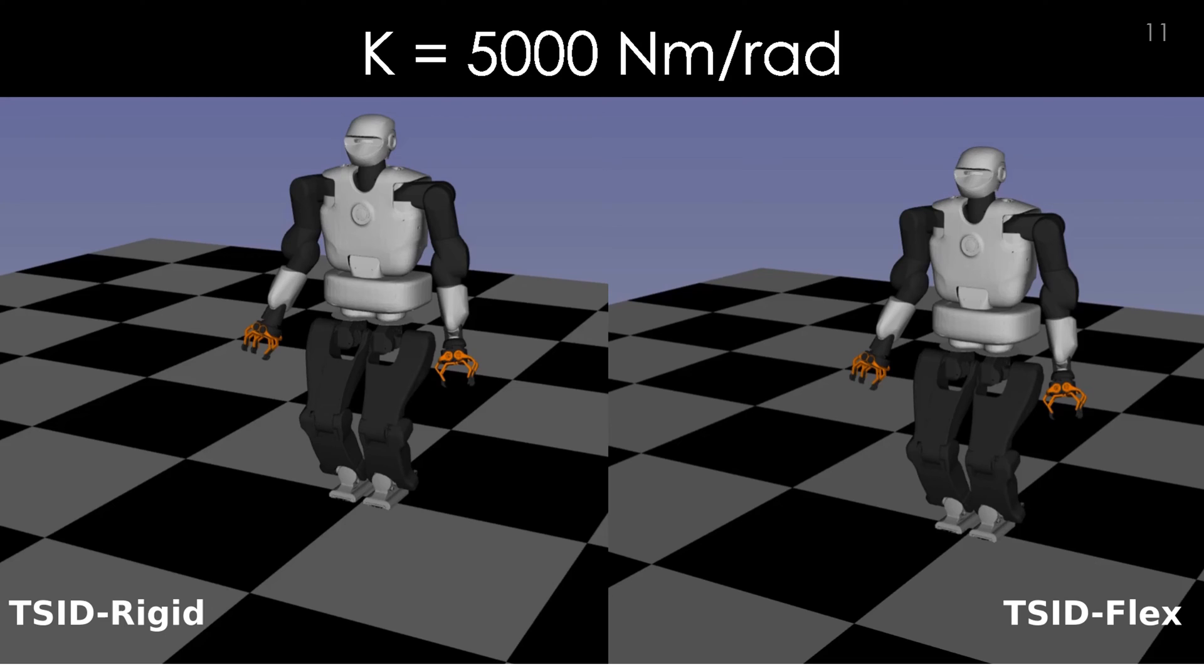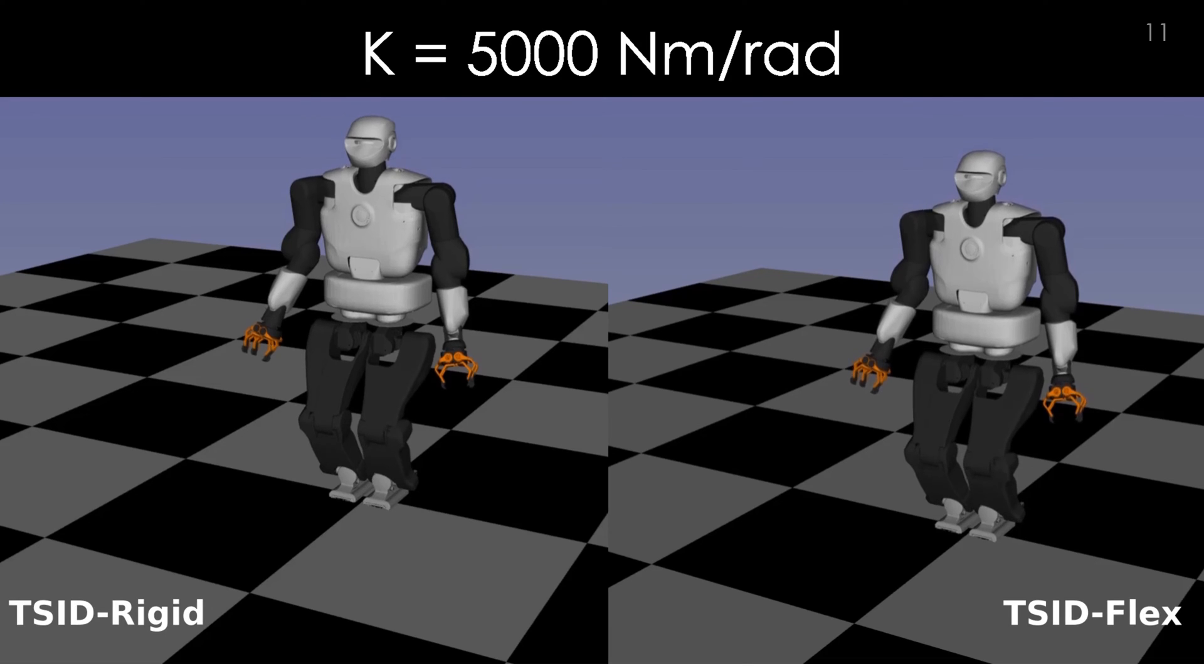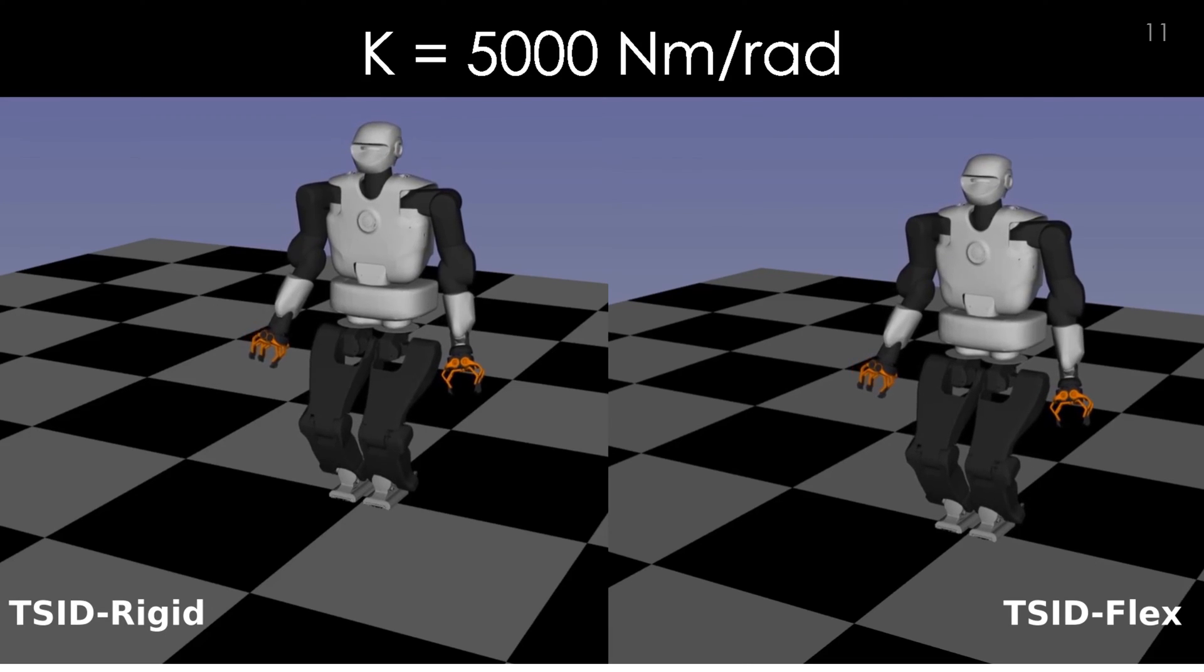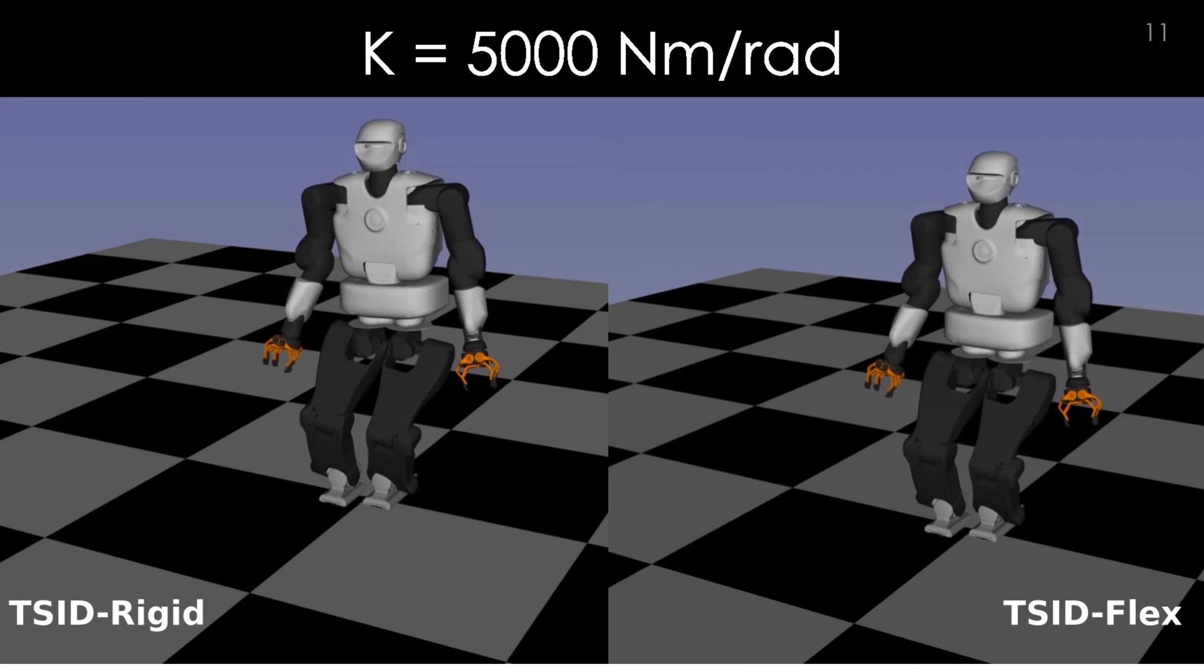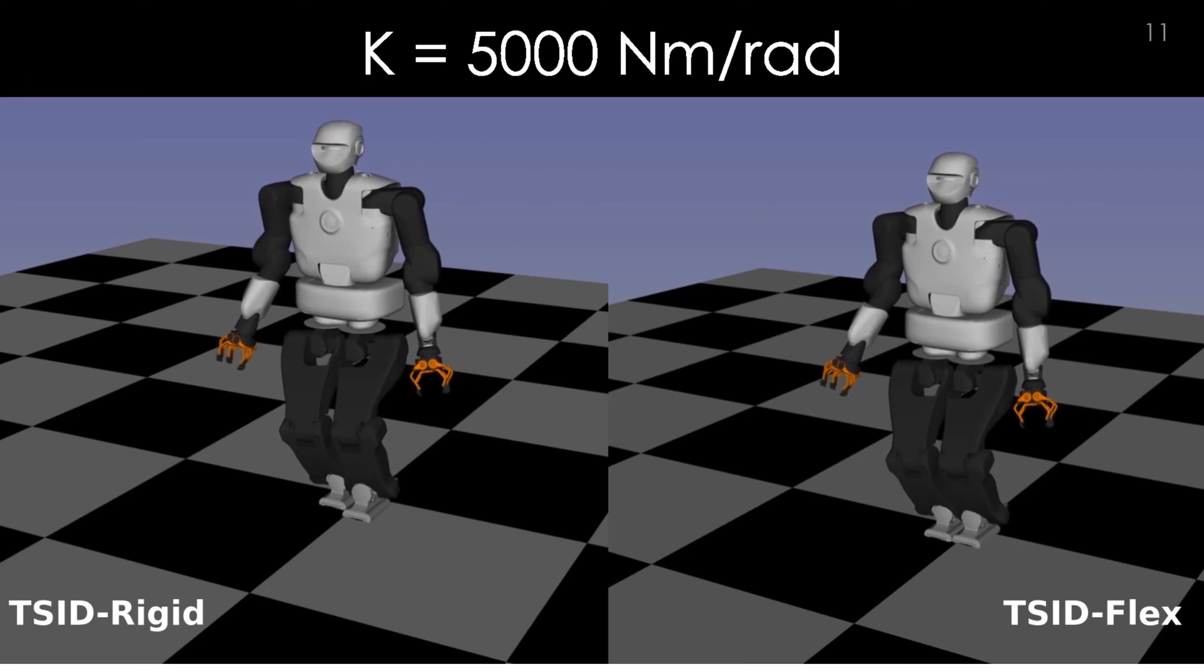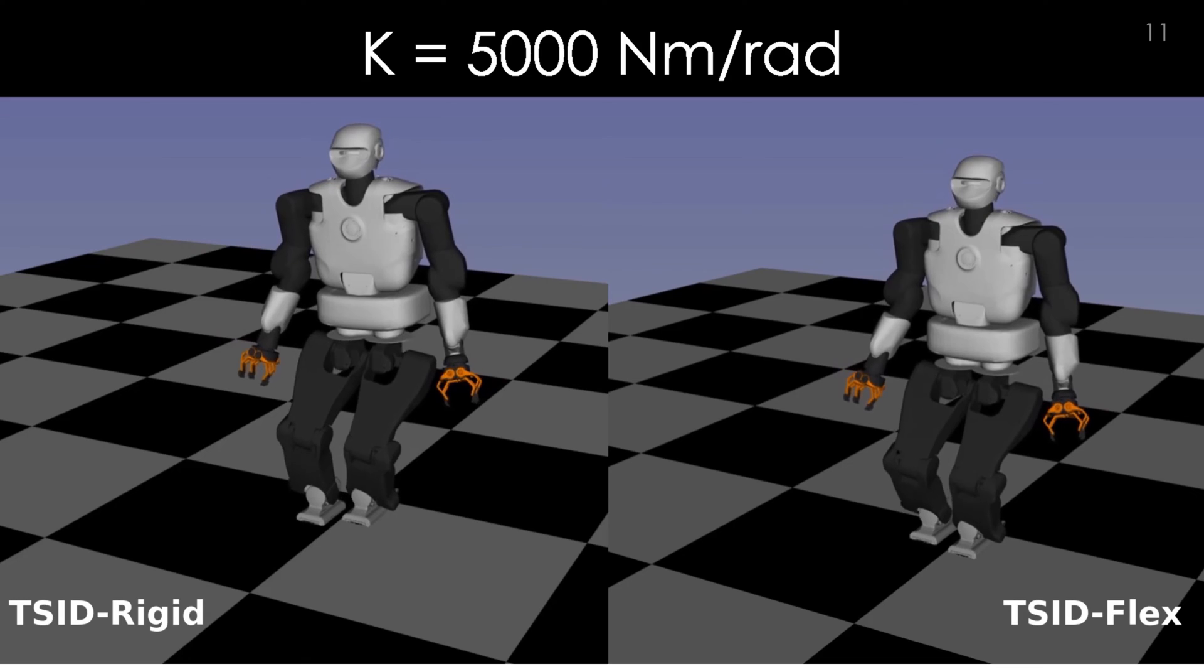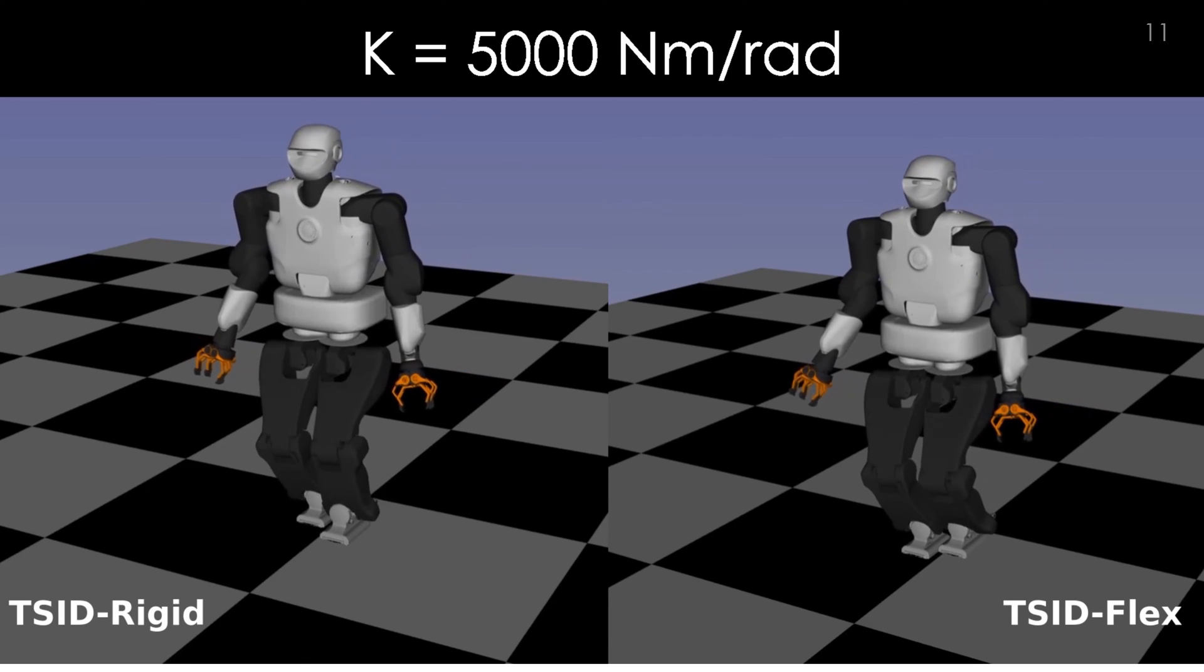Now, we will present you a comparison between the state of the art controller that considers all the robot links as rigid, hereafter called TSID Rigid, and the architecture that we propose in the paper, named TSID Flex.